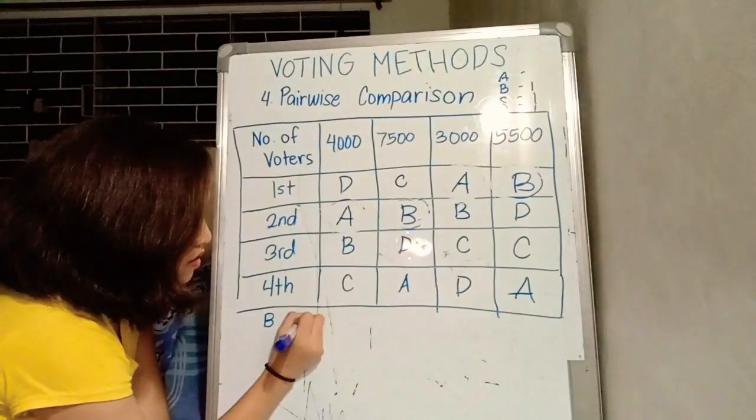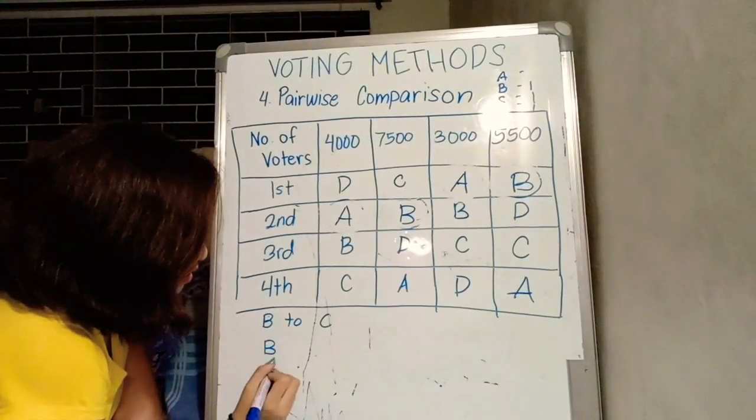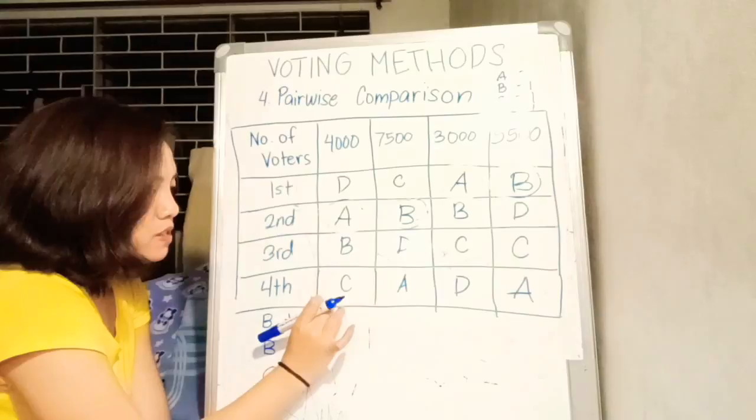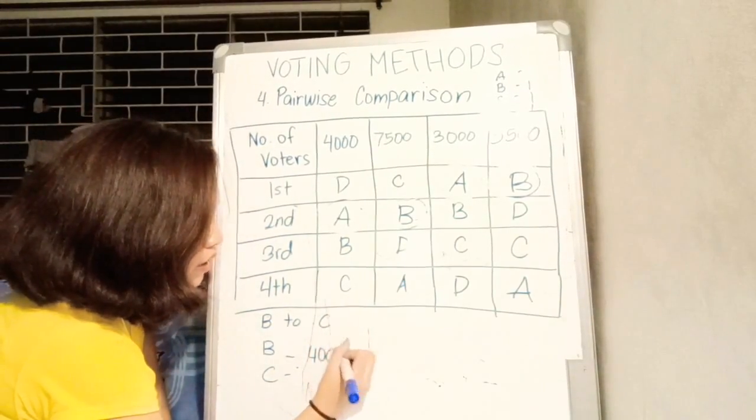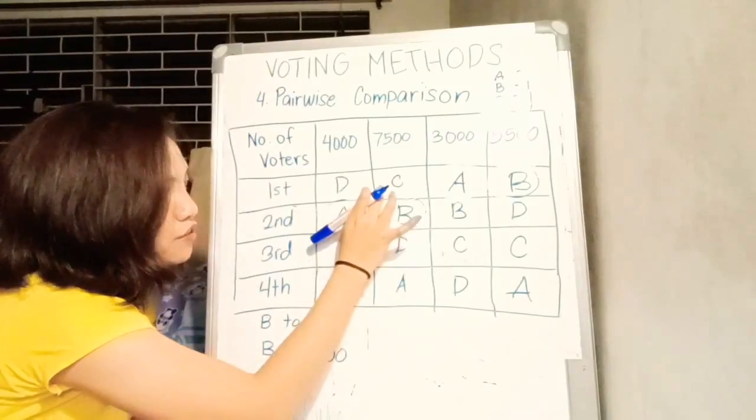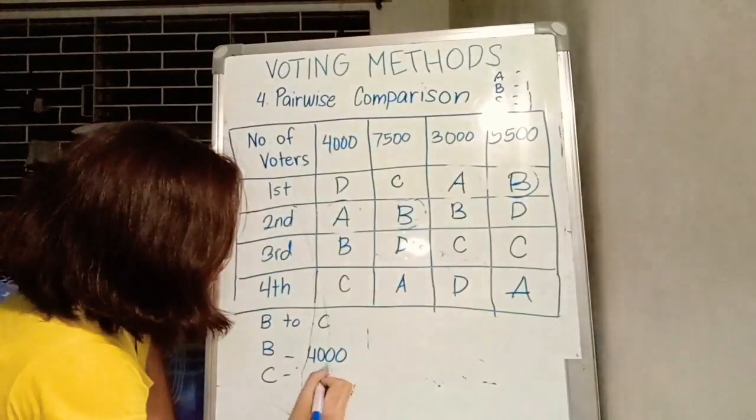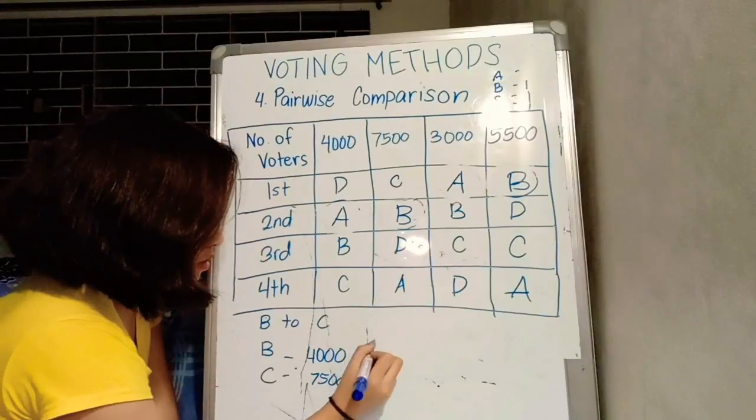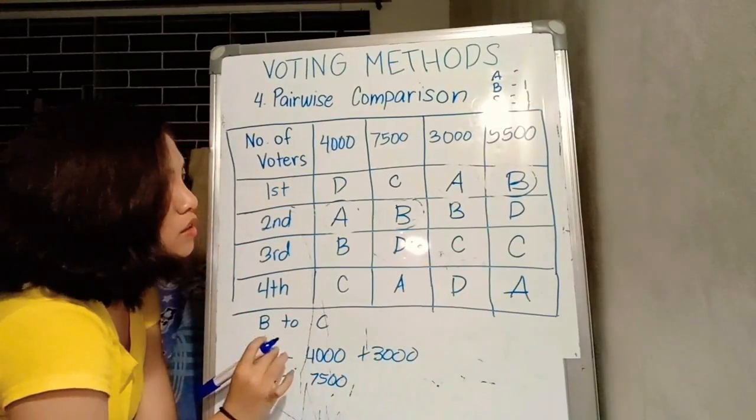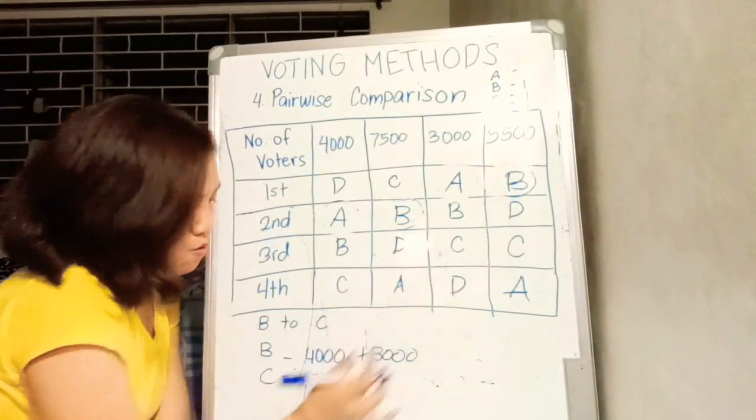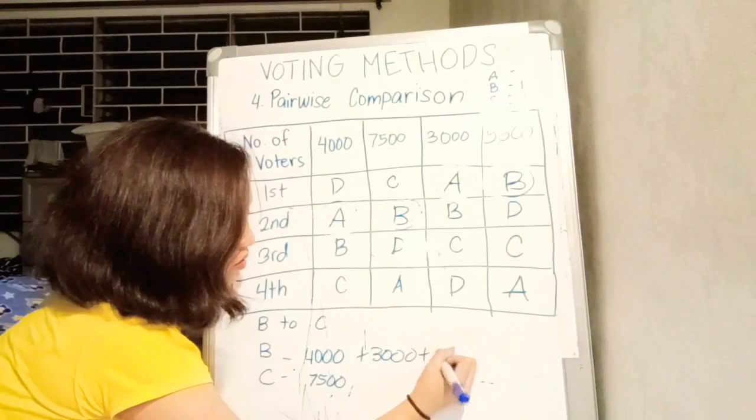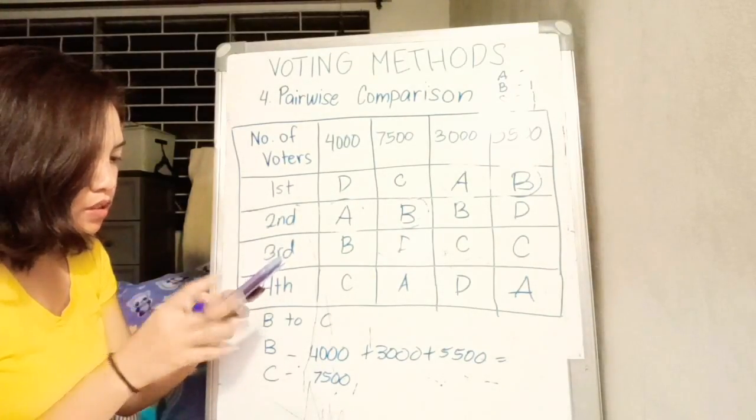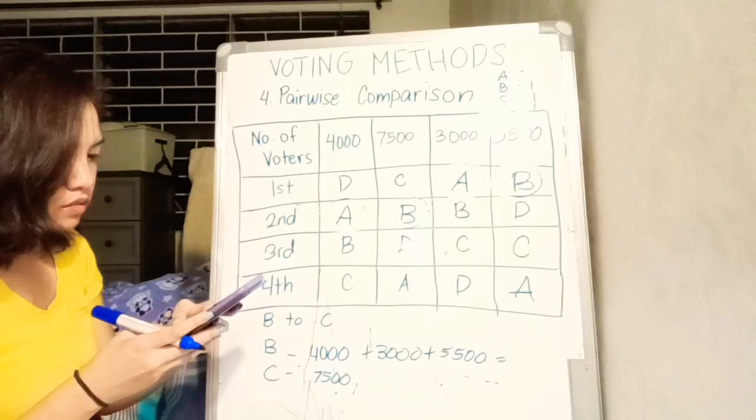Candidate B and C. 4,000 voters prefer B over C, so we award yung 4,000. 7,500 prefer letter C, so 7,500. 3,000 prefer B over C, so plus 3,000 for letter B. And once again, 5,500 prefer B over C. We will add them all up. 4,000 plus 3,000, 7,000 plus 5,500 equals 12,500 votes for candidate B.